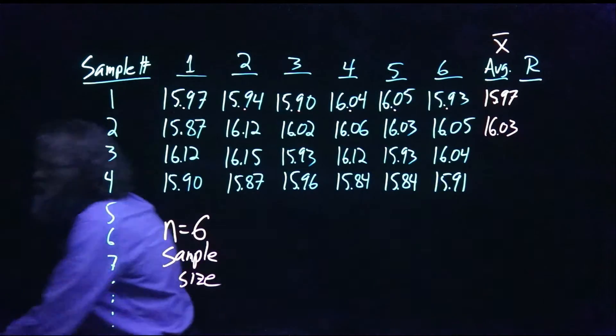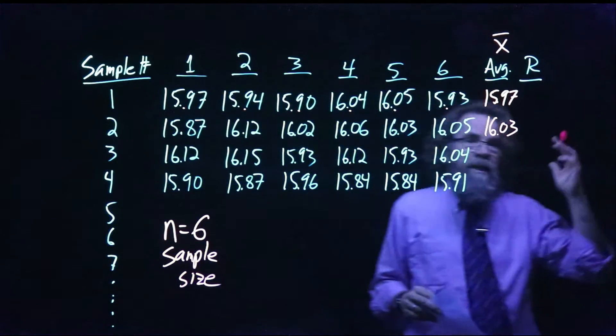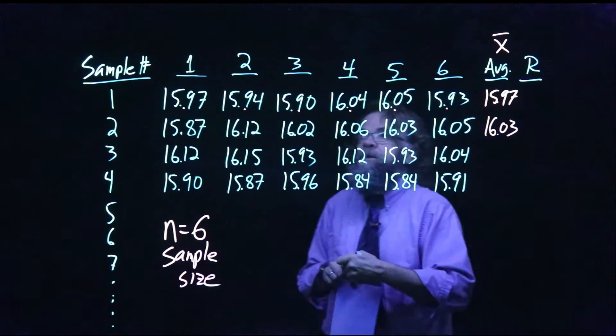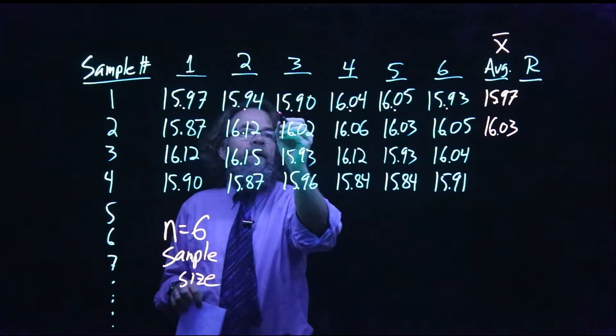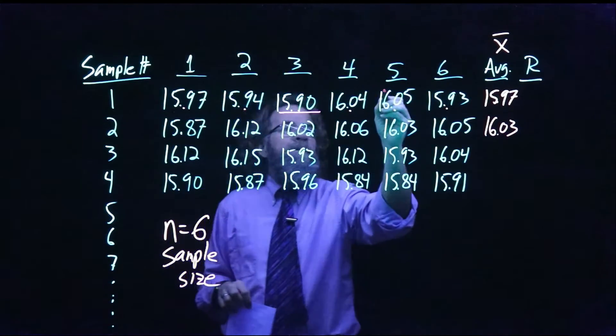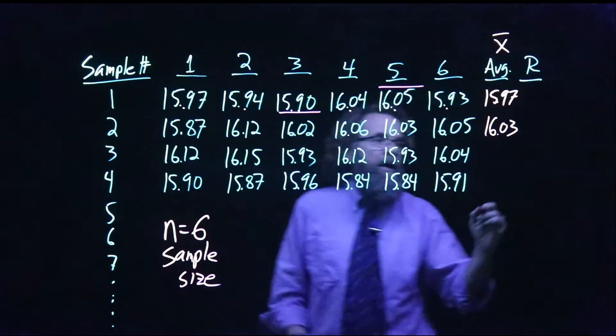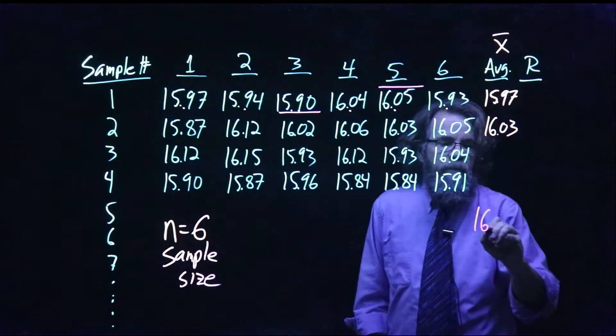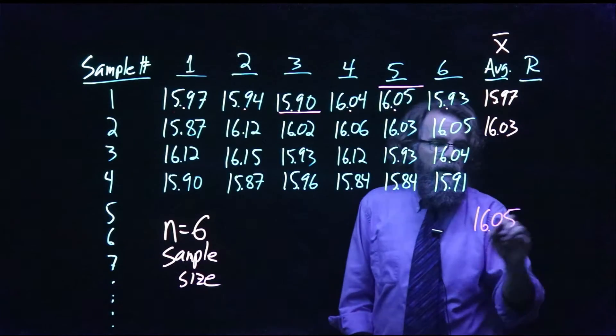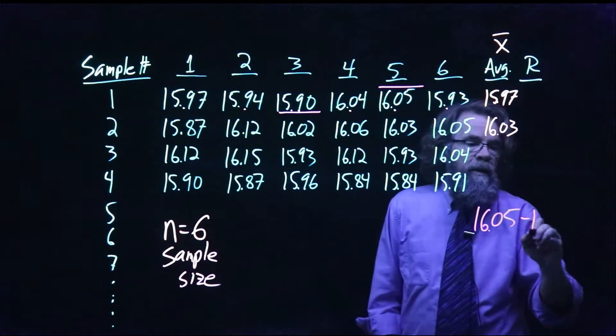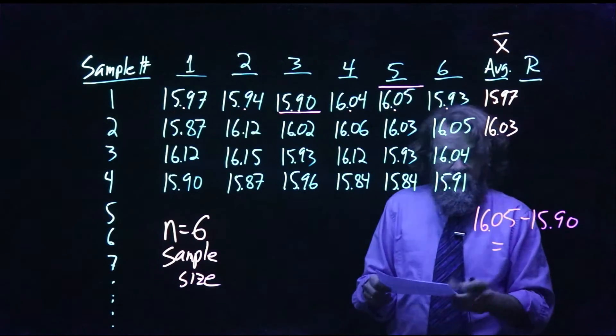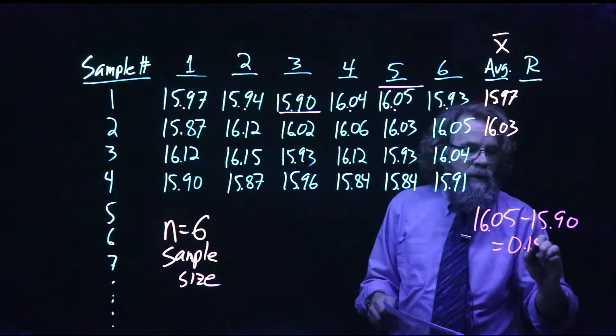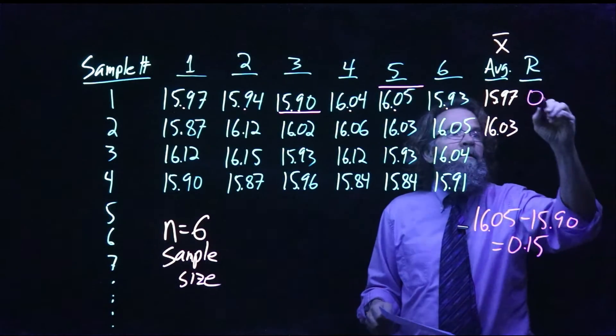But the one that you're probably not as familiar with is the idea of the range. And the range is simply the difference between the biggest number and the smallest number. So looking here, our smallest number is 15.90 and our biggest number is 16.05. So if you take 16.05 and subtract 15.90, you get 0.15. So our range value is 0.15.